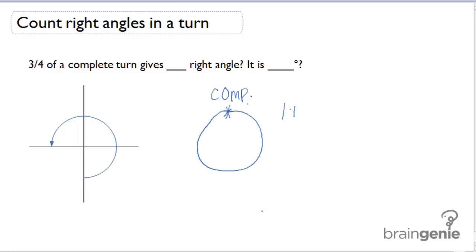You've completed one mathematical turn, which is equivalent to 360 degrees. We can convert turns into degrees using this conversion.